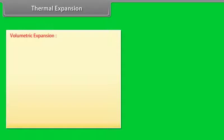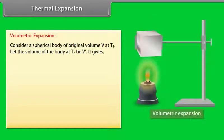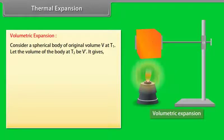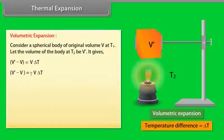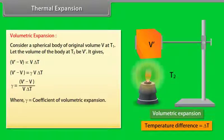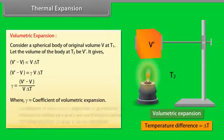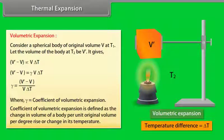Volumetric expansion: Consider a spherical body of original volume V at temperature T1. Let the volume of the body at temperature T2 be V'. Then V' − V = γVΔT. The value of γ = (V' − V)/(VΔT), where γ is the coefficient of volumetric expansion. It is defined as the change in volume of a body per unit original volume per degree rise in temperature.